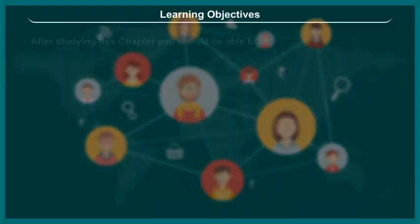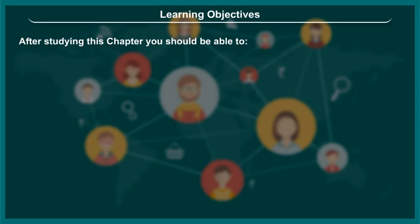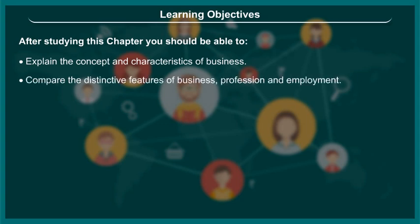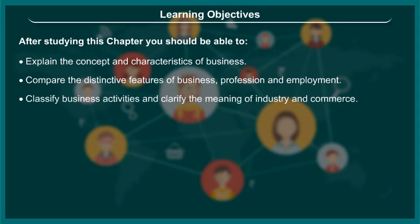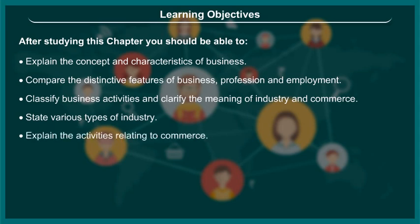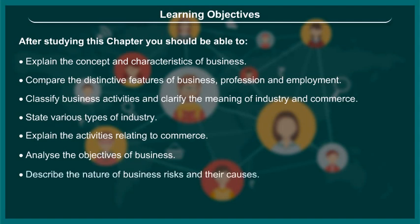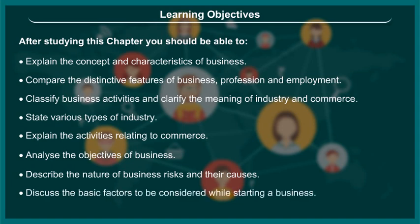Learning objectives: after studying this chapter you should be able to explain the concept and characteristics of business, compare the distinctive features of business, profession and employment, classify business activities and clarify the meaning of industry and commerce, state various types of industry, explain the activities relating to commerce, analyze the objectives of business, describe the nature of business risks and their causes, and discuss the basic factors to be considered while starting a business.